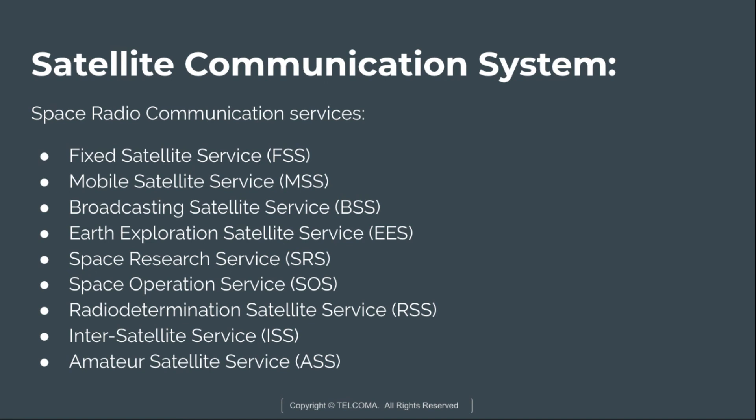The types of space radio communication services include: fixed satellite services, mobile satellite services, broadcasting satellite services, earth exploration satellite services, space research services, space operation services, radio determination satellite services, inter-satellite services, and amateur satellite services. This concludes the overview of the satellite communication system.